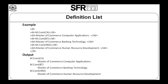Now let us see the example for Definition List. The user specifies the Definition Terms as MCOM CA, MCOM BT, and MCOM HRD. Then the user specifies the Definition Descriptions as Master of Commerce Computer Application, Master of Commerce Banking Technology, and Master of Commerce Human Resource Development. The output is shown below.